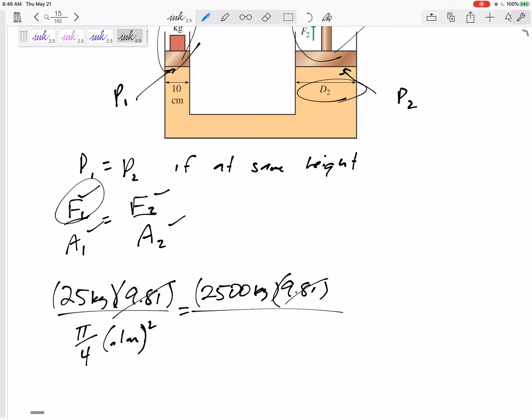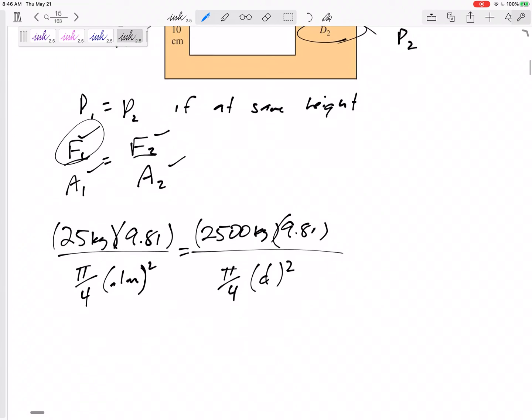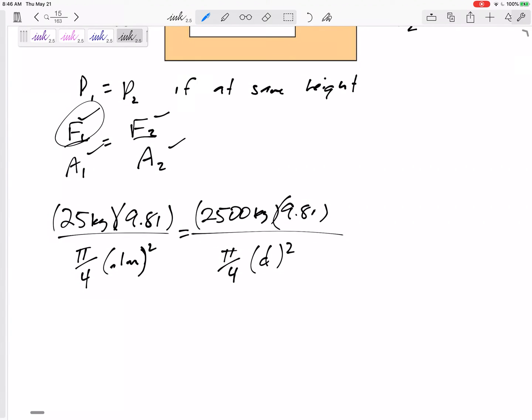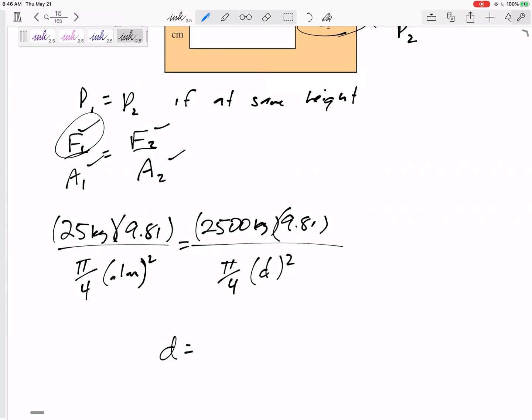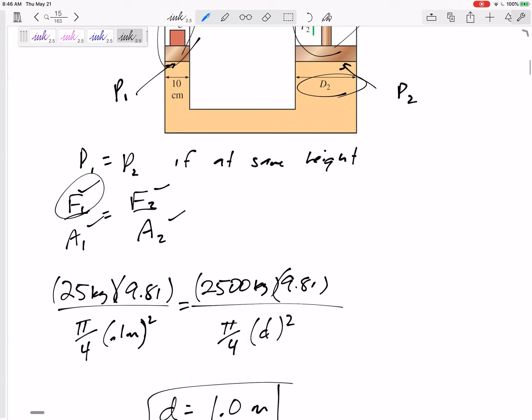So you might have seen if you could factor that out of both sides, but divided by its area pi by 4 and its diameter squared, which I don't know. So then we could get the diameter would have to be 1 meter in order for it to lift this.